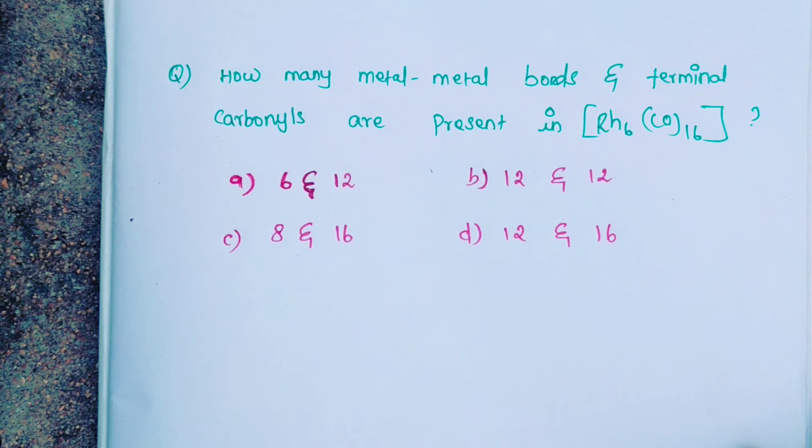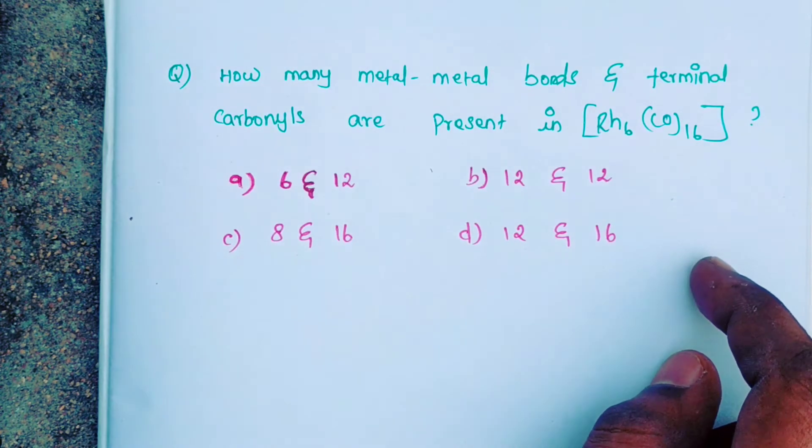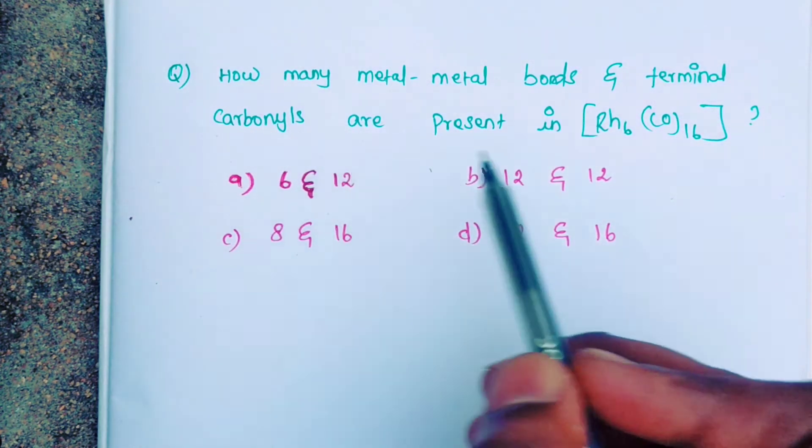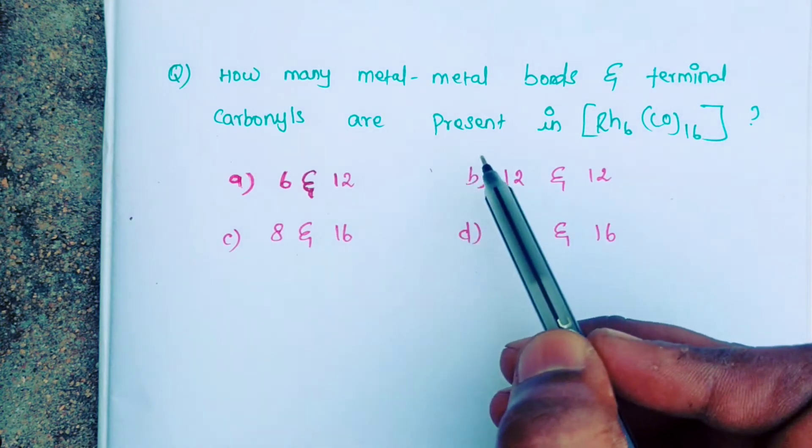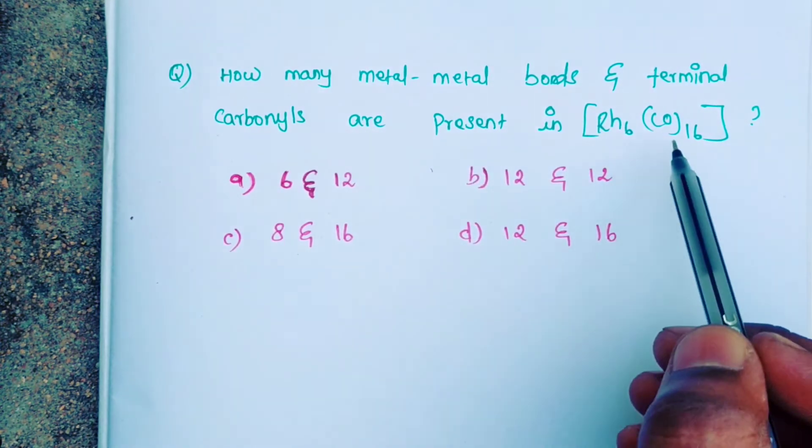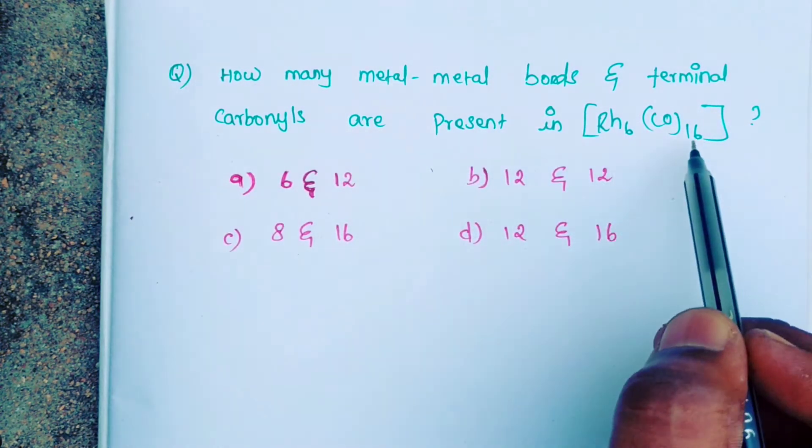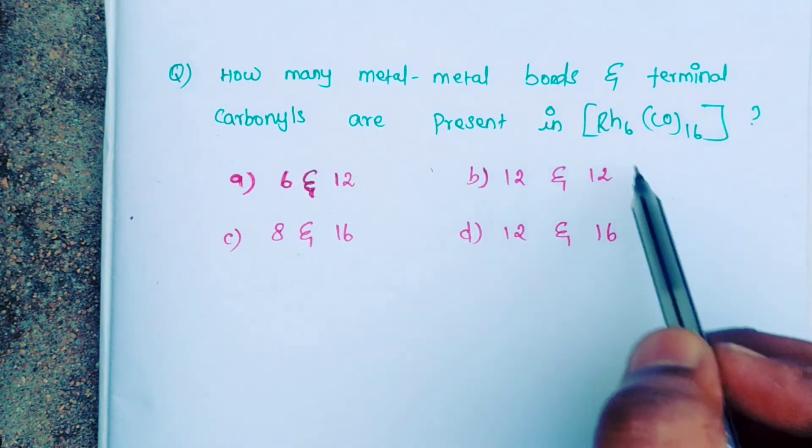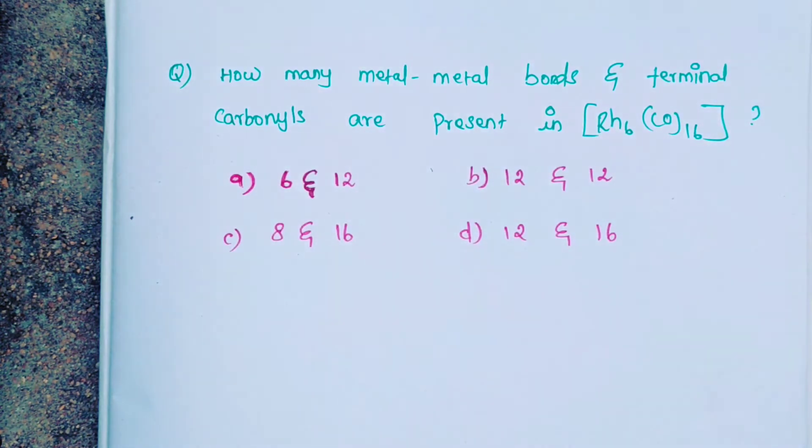This question is from Organometallic Chemistry Part 1. In our classes, Organometallic Chemistry has five parts. This question is based on the first part. The question asks: how many metal-to-metal bonds and terminal carbonyls are present in the carbonyl cluster Rh₆(CO)₁₆, which is a metal cluster.